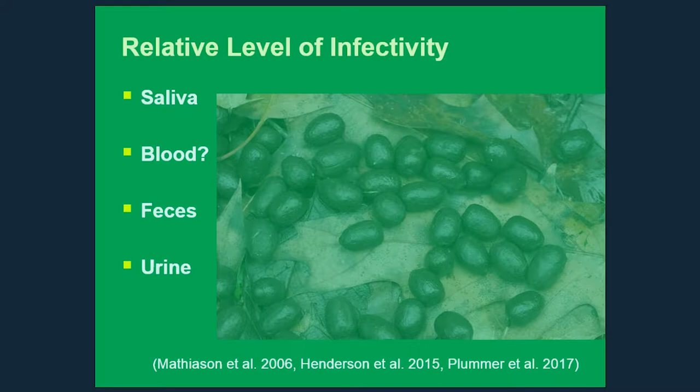Feces seems to be a little below saliva and blood in terms of infectivity, and urine seems to be on the lower end — it's harder to detect prions in urine than in feces and other secretions. These are things we worry about in terms of transmitting the disease. There are a couple of important mechanisms by which it's transmitted: the first is probably direct contact between animals, passed by bodily fluids.